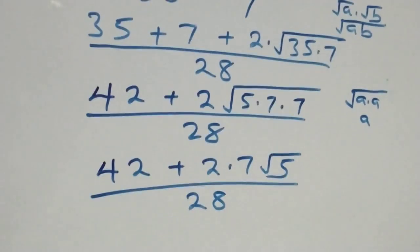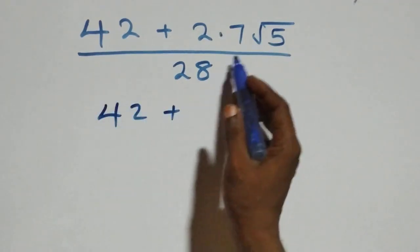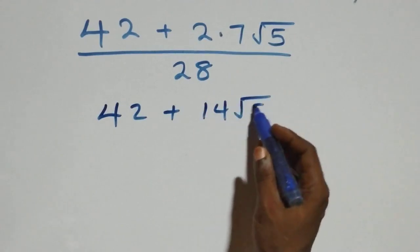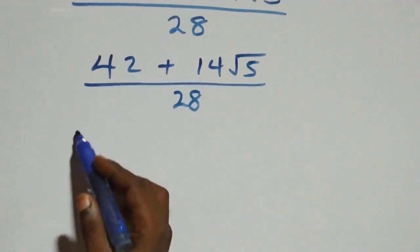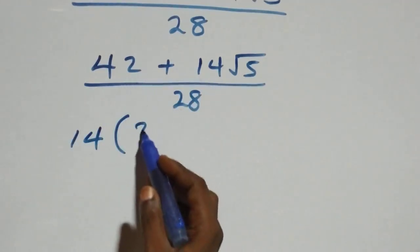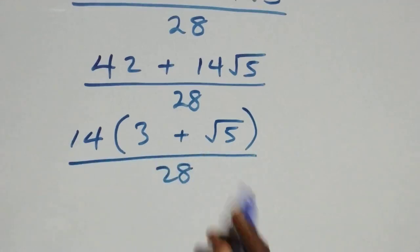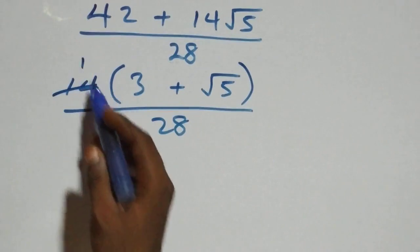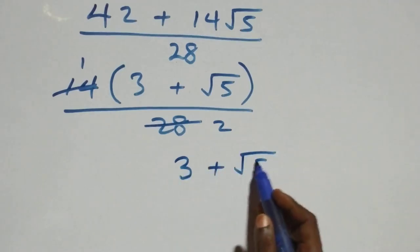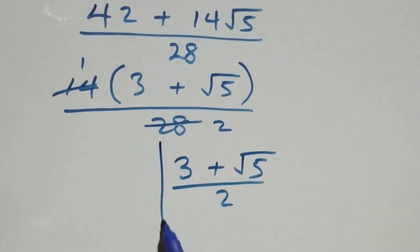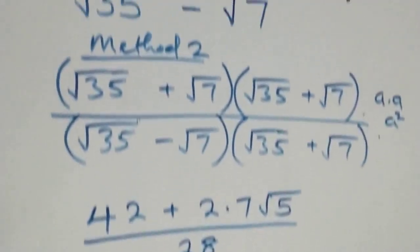This becomes 42 plus 14 root five over 28. Then 14 is common, we factor it out and have 14 into bracket (3 plus root five) over 28. Cancelling 14 gives 3 plus root five all over 2, which is the same as all we have in the first method.